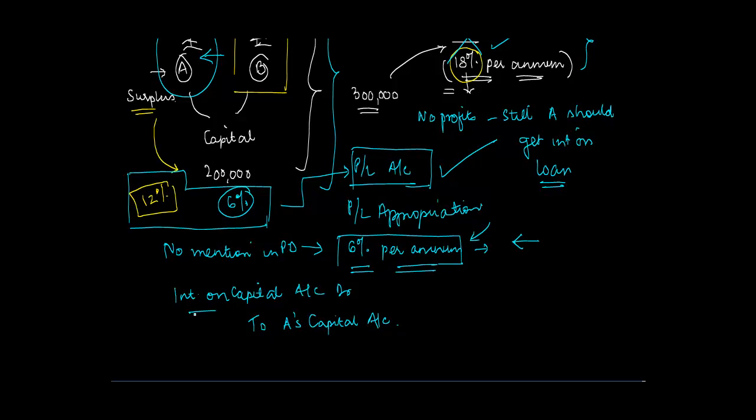Thereafter, this interest on capital is transferred to the profit and loss account. Why? Because it's a charge against the profit. So towards the end, whatever is the balance, that is transferred to the profit and loss account.